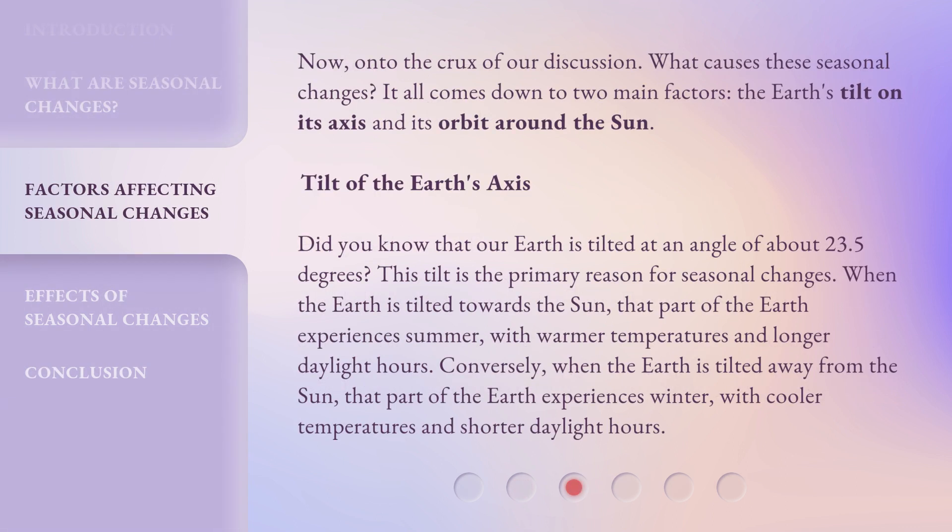Now, on to the crux of our discussion: what causes these seasonal changes? It all comes down to two main factors — the Earth's tilt on its axis and its orbit around the Sun.